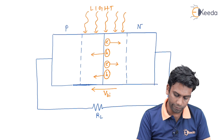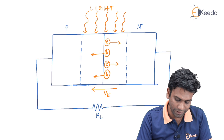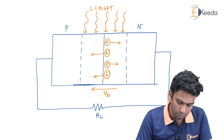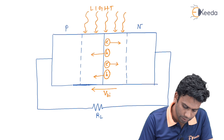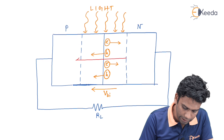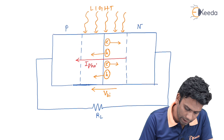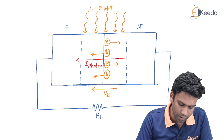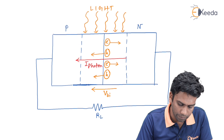This will be the movement of the electrons and holes generated due to the incidence of the light. We can say that the total current direction will be from n-side to p-side, that is I_photon. I_photon is the current due to the incidence of light on the depletion region of the solar cell.